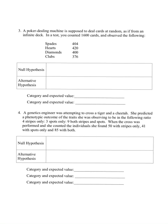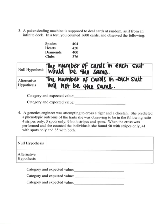So my null hypothesis would be that the number of cards in each suit would be the same. My alternative hypothesis would be that the number of cards in each suit are not going to be the same. In this case, we have four categories that a card could fall in: either spades, hearts, diamonds, or clubs. Because I'm expecting them to all be equal, I would expect each of them to have 25%. So I will multiply the total number, 1,600, by 0.25, or 25%, for each of them.